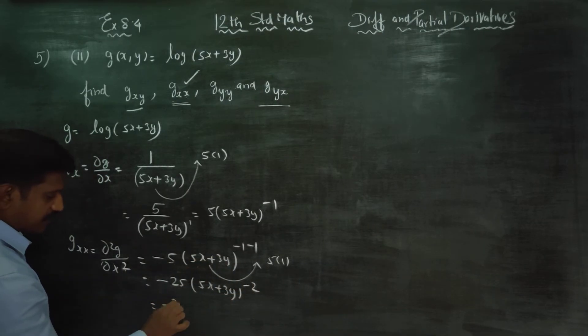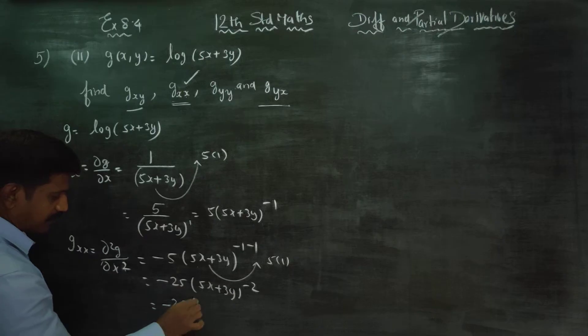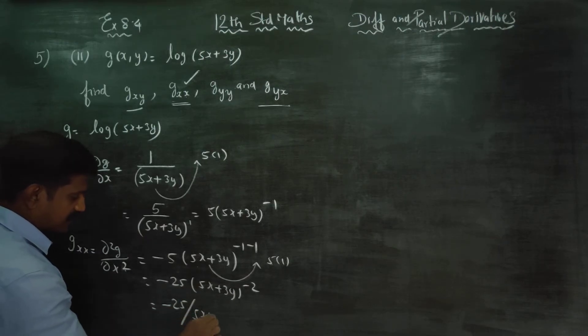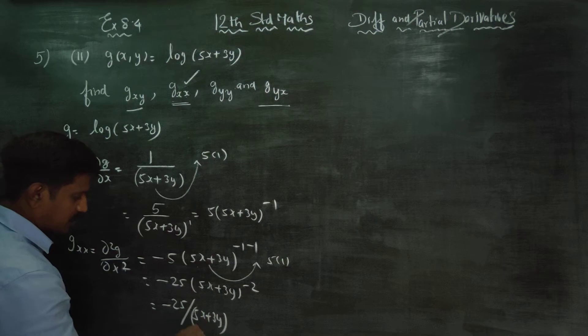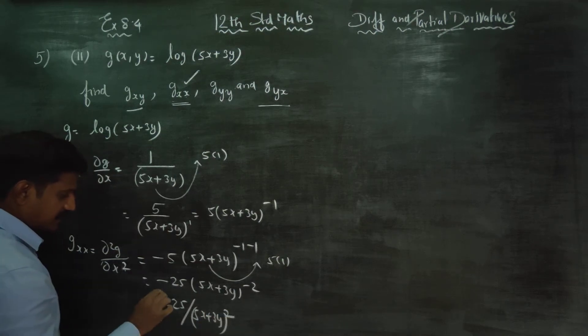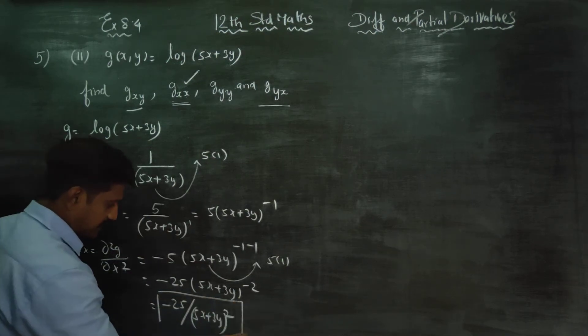Your answer is minus 25 by (5x plus 3y) whole square. This is the answer for gxx.